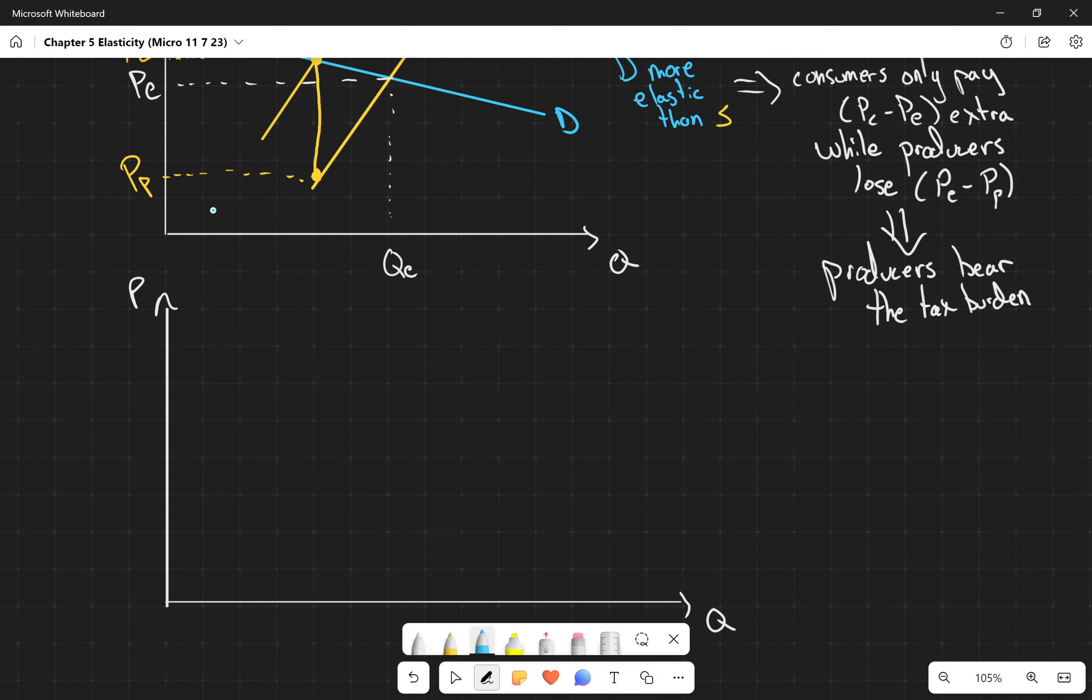So now we're going to have a normal demand curve and we're going to have a flatter supply curve. So in this situation, we have equilibrium price, equilibrium quantity. We get some sort of tax. Let's say it's the same size as this tax. So it's going to be one, two, three squares.